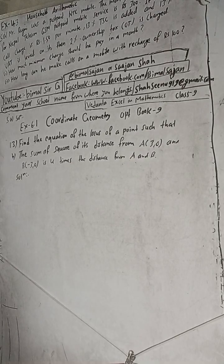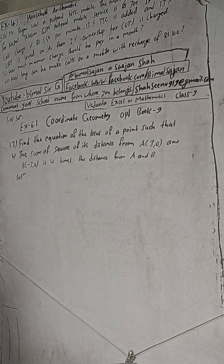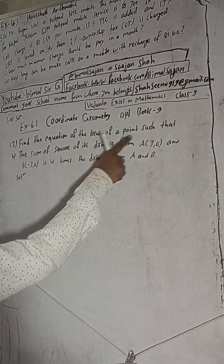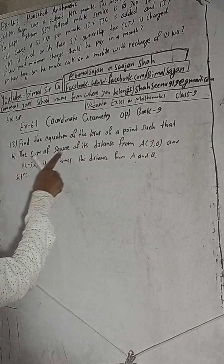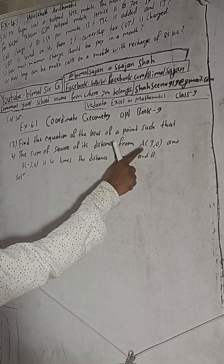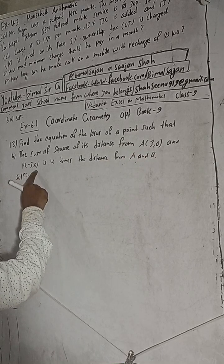Hi class 9 and 10 students, welcome back to Bhimalsarjee YouTube channel. This is question number 13B, exercise 6.1, coordinate geometry, OPT maths book class 9. The question is: find the equation of the locus of a point such that the sum of squares of its distance from A(3,0) and B(-3,0) is four times the distance from A and B.